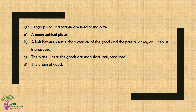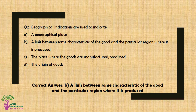Question No. 2: Geographical indications are used to indicate — Option A: A geographical place, Option B: A link between some characteristic of a good and the particular region where it is produced, Option C: The place where the goods are manufactured or produced, Option D: The origin of goods. The correct answer is Option B — a link between some characteristic of a good and the particular region where it is produced.